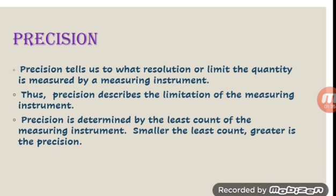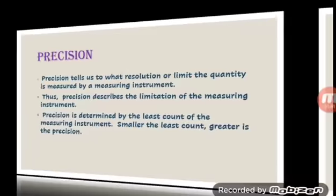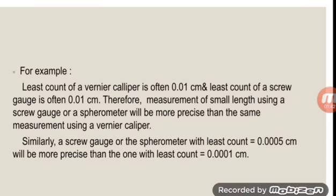What is least count? Least count is the minimum value that can be measured by a given instrument. For example, the least count of a vernier caliper is often 0.01 cm and the least count of the screw gauge is 0.001 cm. Therefore, the measurement of a small length using a screw gauge or the spherometer will be more precise than the same measurement using a vernier caliper, as the least count of the vernier caliper is 0.01 cm.